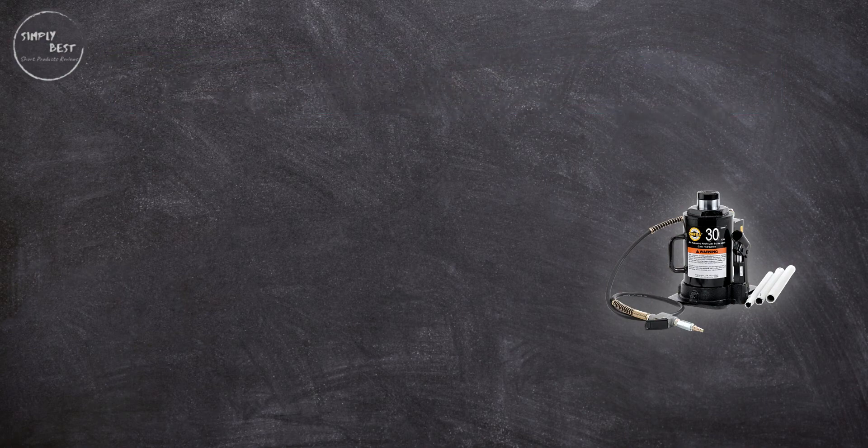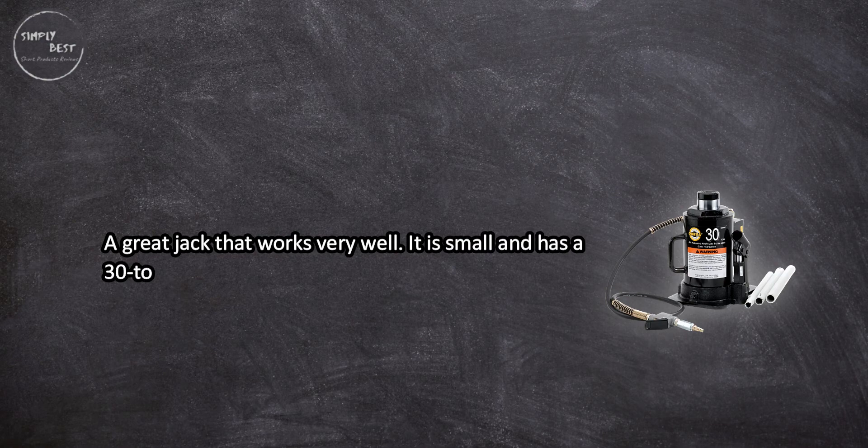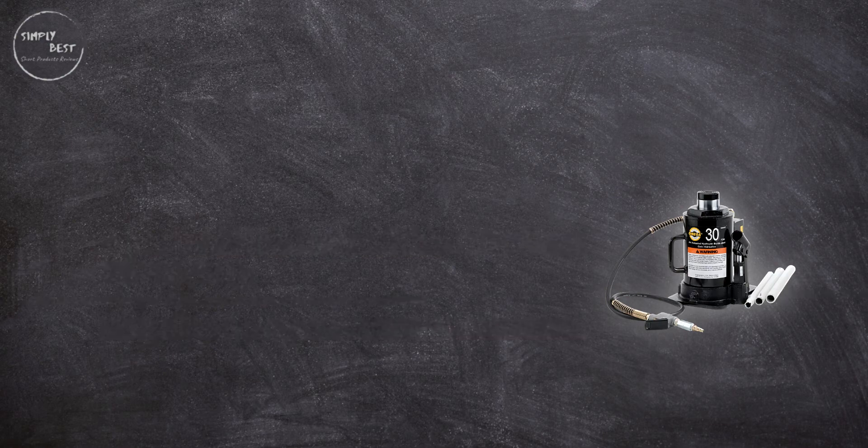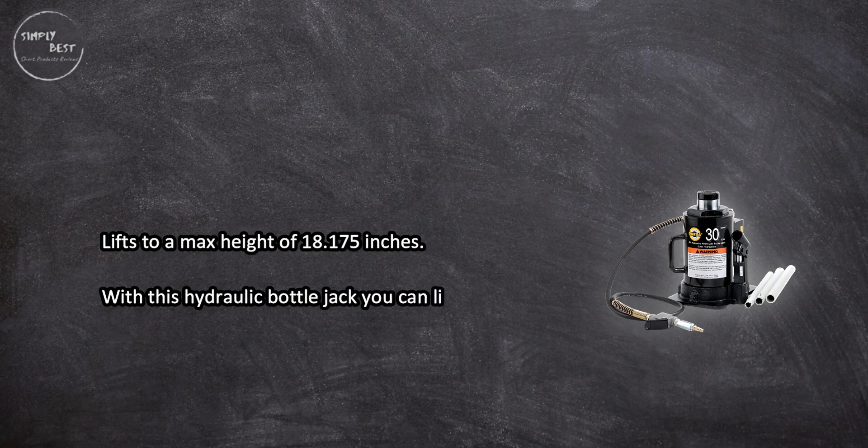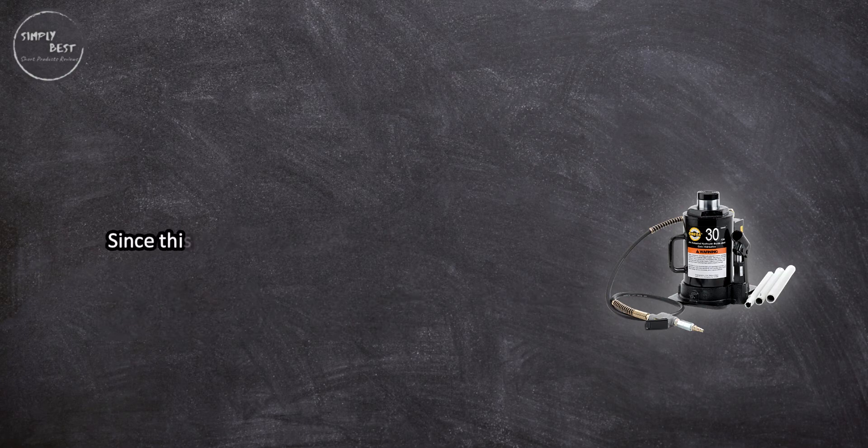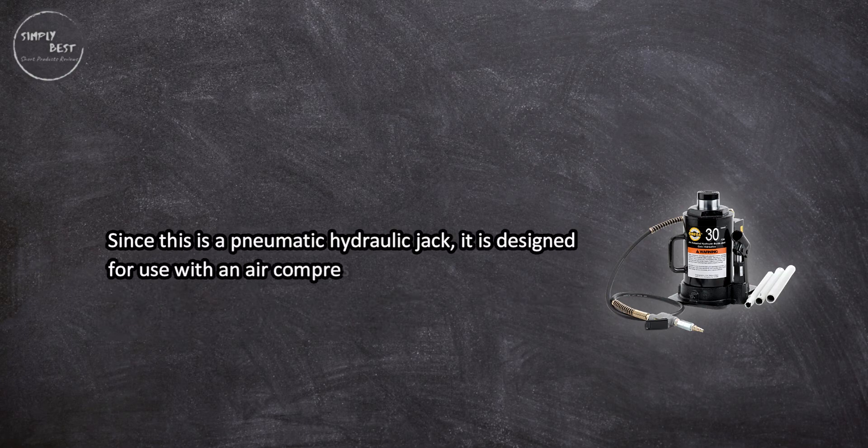A great jack that works very well. It is small and has a 30-ton capacity. It is good for when you need to work in a small area. Lifts to a max height of 18.175 inches. With this hydraulic bottle jack, you can lift a lot of weight with very little effort on your part. Since this is a pneumatic hydraulic jack, it is designed for use with an air compressor.